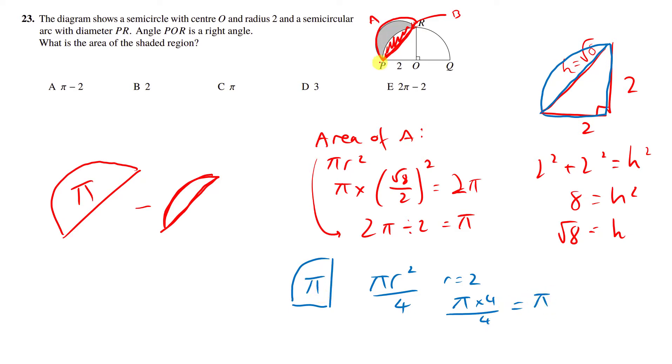That shape, this semicircle, is actually the exact same area as this quarter circle. And so to find this slither, we just need to subtract the area of this triangle.